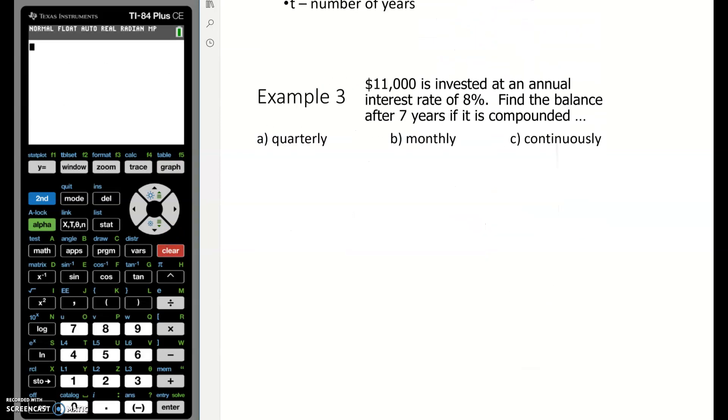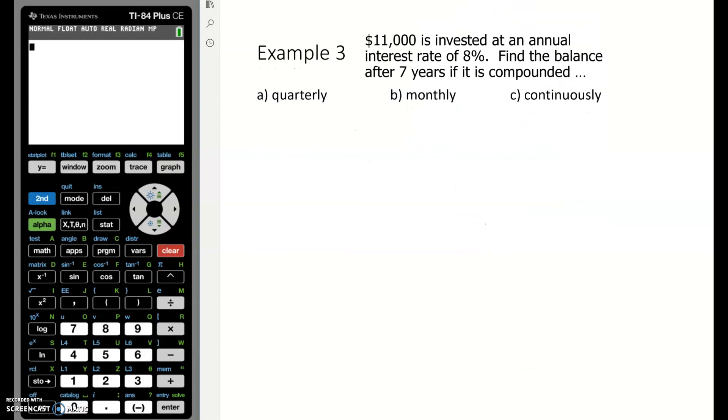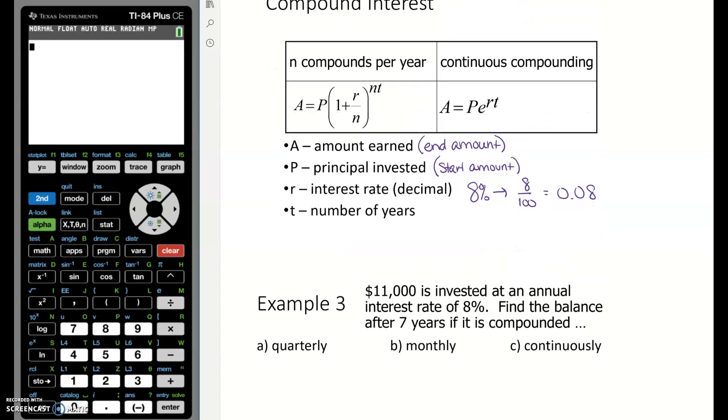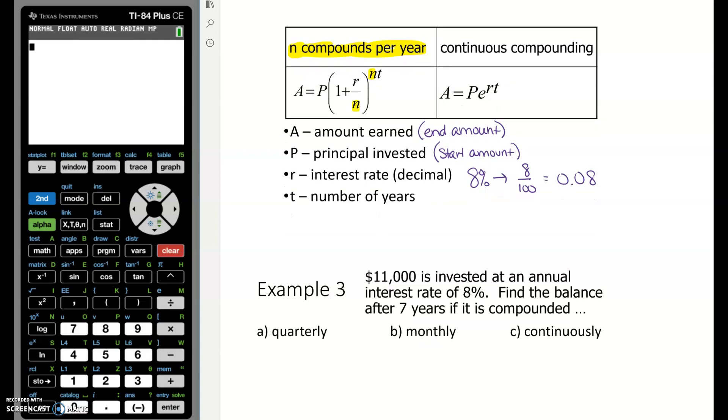And then N - N is if you're compounding quarterly, monthly, daily, weekly. N is how many times per year you are compounding. So it says right up here N compounds per year and then N is in that formula. So keep that formula handy.